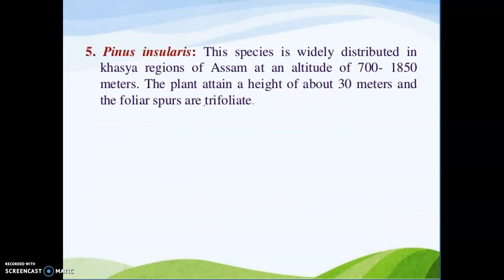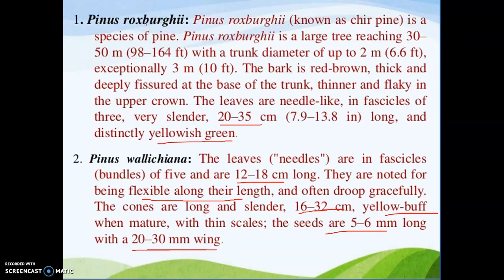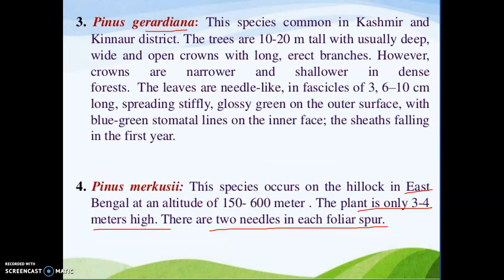Pinus insularis is also trifoliate like Pinus roxburghii. So we have studied five species, out of which three are trifoliate: Pinus insularis, Pinus gerardiana, and Pinus roxburghii. Pinus wallichiana is pentafoliate with five needles in one spur, and Pinus merkusii is bifoliate with two needles per spur.